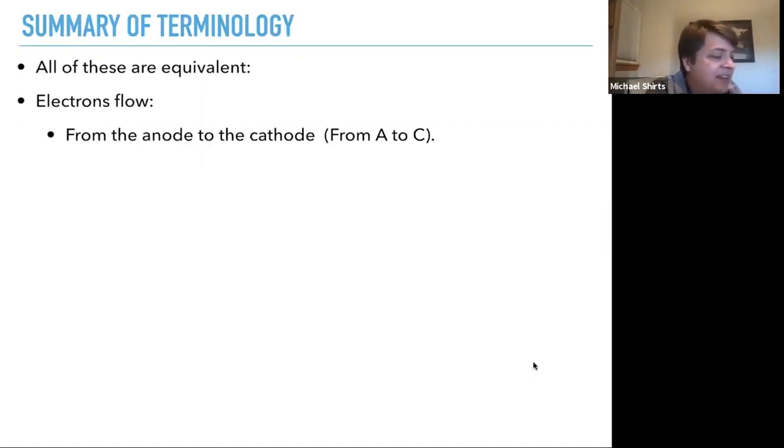Some summary of terminology, just to help keep track of all the different labels that are going on. So all of these are equivalent. Electrons flow from the anode to the cathode. And one way to remember that, A to C, they go alphabetically from anode to cathode. Electrons go from anode to cathode.